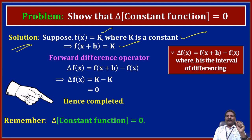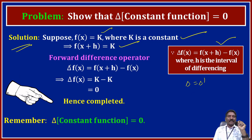Since delta f of x is equal to f of x plus h minus f of x — the forward difference operator, the first difference operator del power 1 — where h is the interval of differencing. Here f of x plus h is k and f of x is also k, so k minus k is 0. Therefore delta f of x is equal to 0.